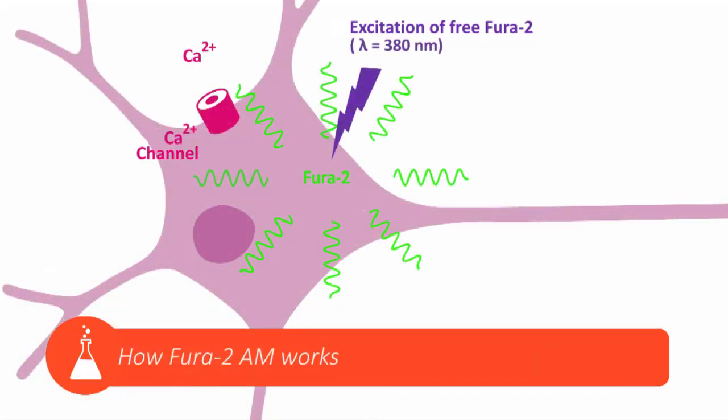During each neuronal activity, action potentials are generated. These action potentials cause neuronal membrane depolarization, which opens voltage-gated calcium channels. This, in turn, allows extracellular calcium ions to enter neurons.